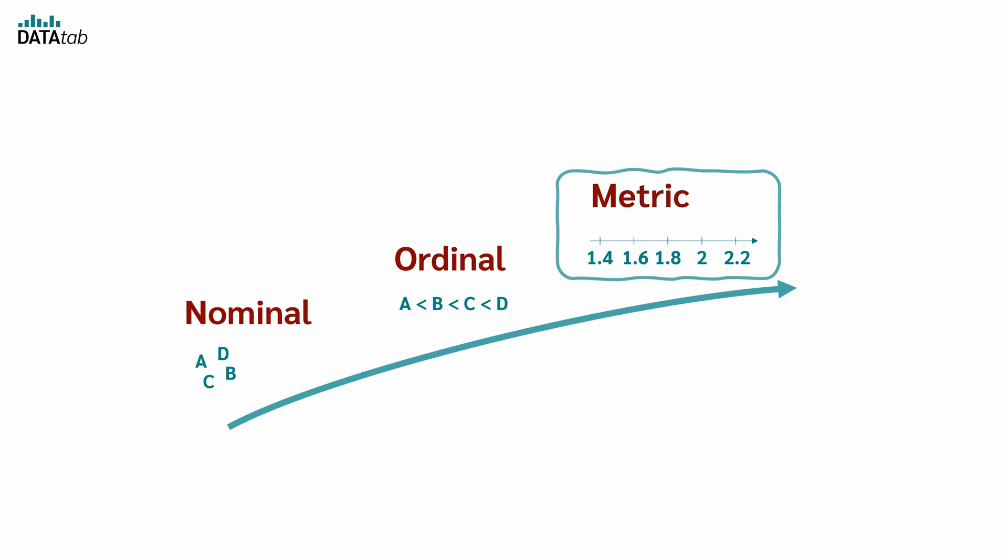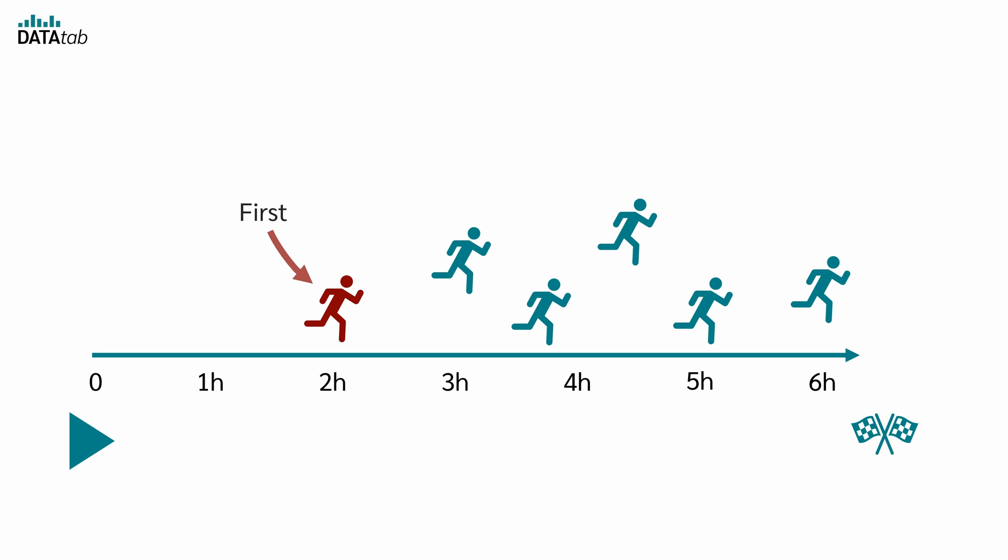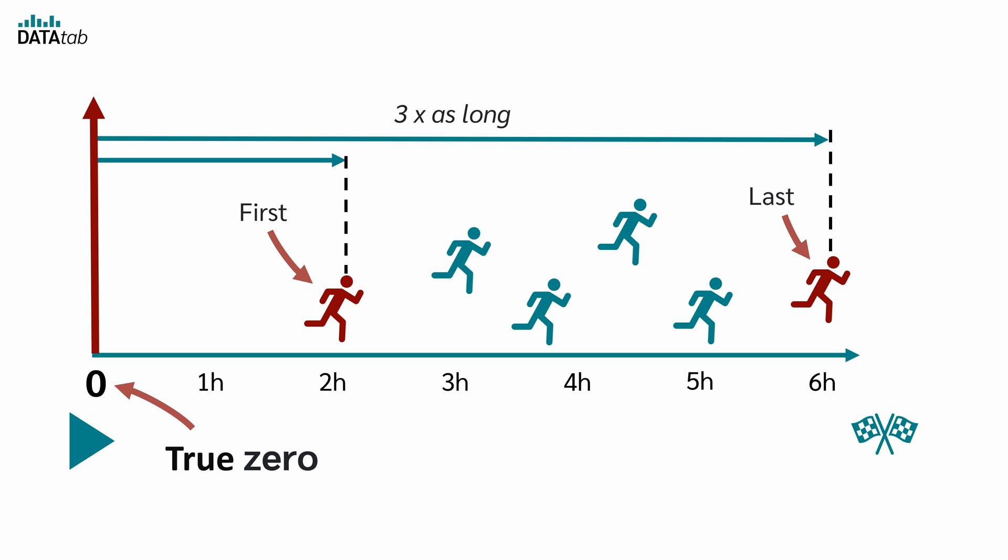As already mentioned, metric level of measurement can be further subdivided into interval scale and ratio scale. But what is the difference between interval and ratio level? Let's look at an example. In a marathon, of course, the time of the marathon runners is measured. Let's say the first one took two hours and the last one finished the marathon in six hours. Here we can say that the fastest runner was three times as fast as the slowest. Or to put it the other way around, the slowest one took three times as long as the fastest one. This is possible because there is a true zero point at the beginning of the marathon, where all runners start from zero.